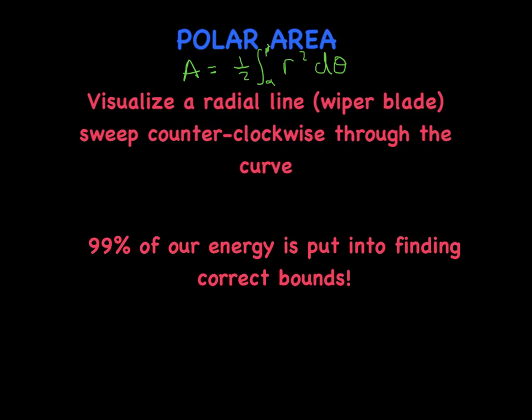Basically, what we're going to do is we're going to visualize some radial lines today, a.k.a. wiper blades. When we talk about the wiper blades, the pivot point is sitting right on the pole, and then that wiper blade is rotating or sweeping counterclockwise throughout the curve, whether it's a limacon or a rose petal or whatever. And, like always, 99% of our energy is going to be put into getting the correct bounds. There's certainly no other students throughout the country are going to have trouble putting the r in there. It's all about the bounds, getting the correct bounds. And we're going to finish with a big bang. The last slide is going to be the area between two polar curves, which kind of has its own twists and turns to it as well.